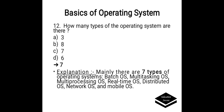How many types of operating systems are there? Options: A. 3, B. 8, C. 7, D. 6. Correct answer is option C, 7. Mainly there are 7 types of operating systems: batch operating system, multi-tasking operating system, multi-processing operating system, real-time operating system, distributed operating system, network operating system, and mobile operating system.